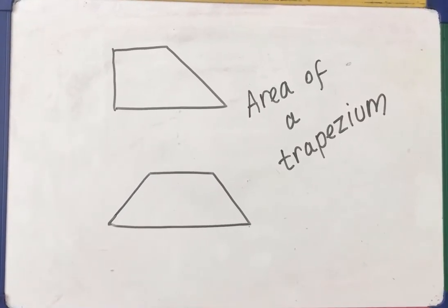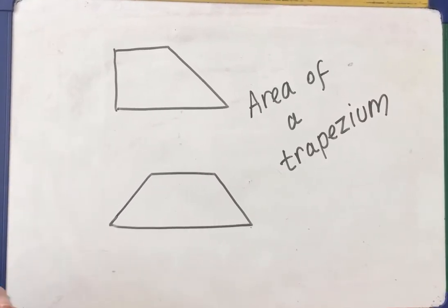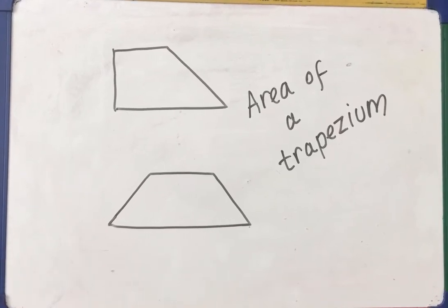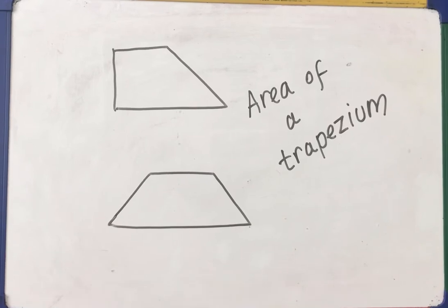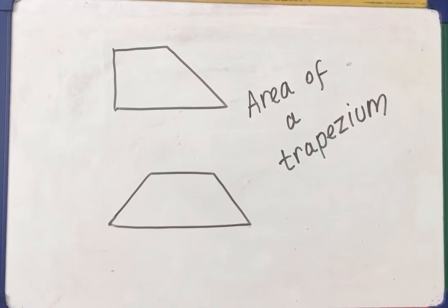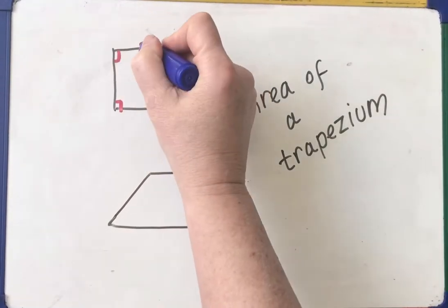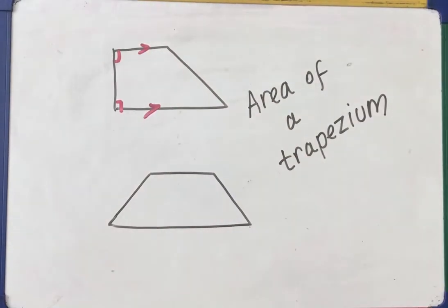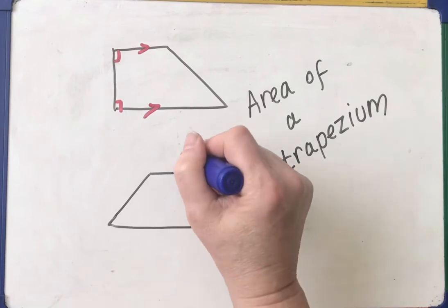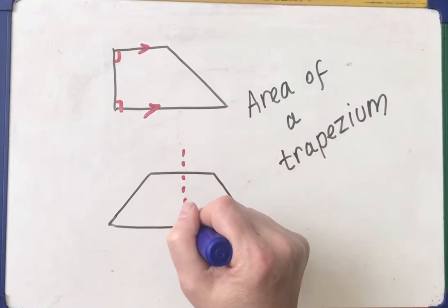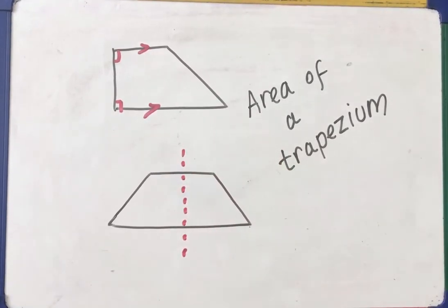Hello, this little video is going to show you how to calculate the area of a trapezium. A trapezium is a quadrilateral — a four-sided shape that has one pair of parallel sides. If it's a right-angled trapezium like this, the parallel sides are here where I've put the arrows. And in an isosceles trapezium, that means it's got a line of symmetry, like an isosceles triangle — you can fold it in half.